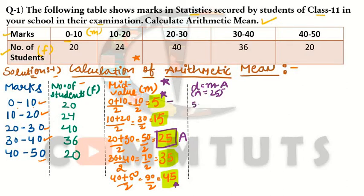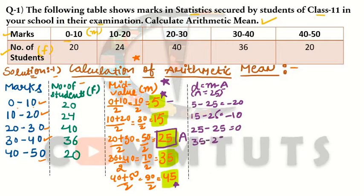Now we calculate deviations. Mid value 5: 5 − 25 = −20. Mid value 15: 15 − 25 = −10. Mid value 25: 25 − 25 = 0. Mid value 35: 35 − 25 = +10. Mid value 45: 45 − 25 = +20. Deviations are now calculated.